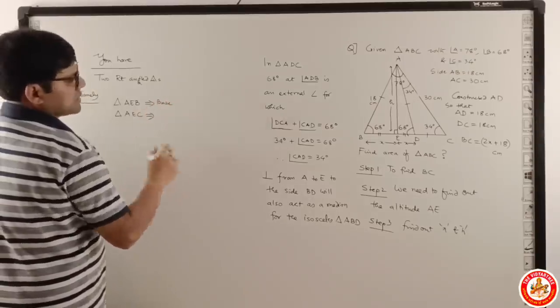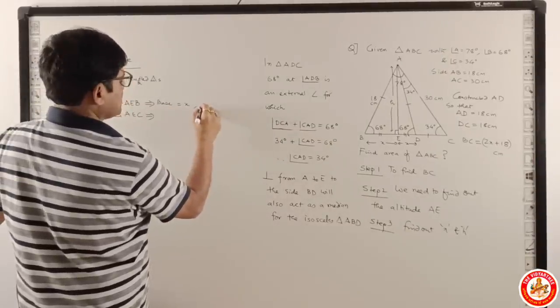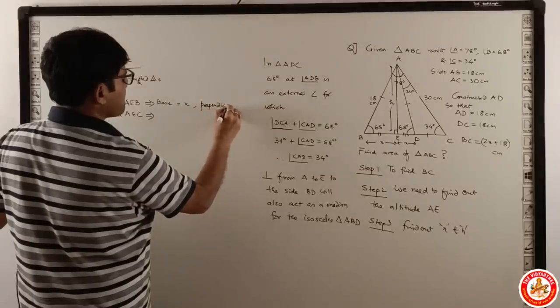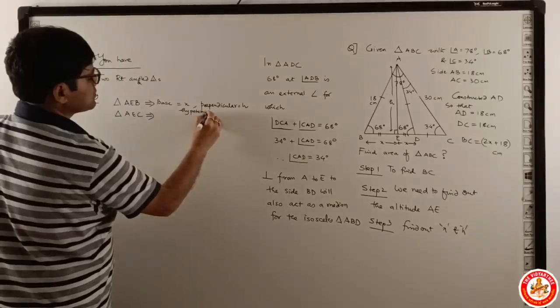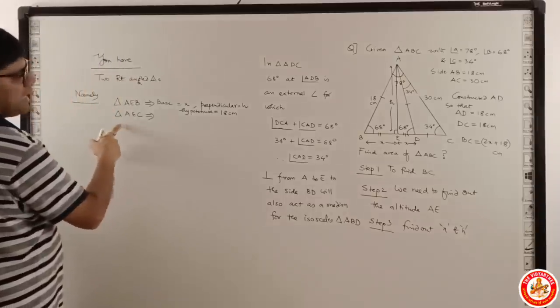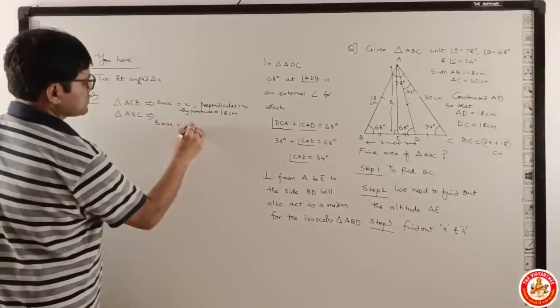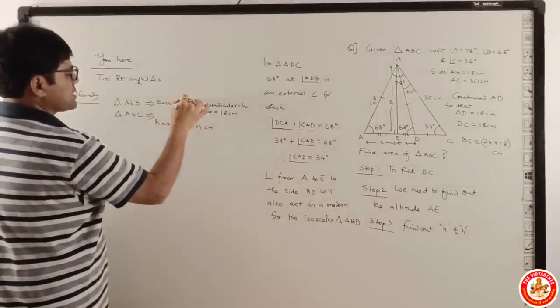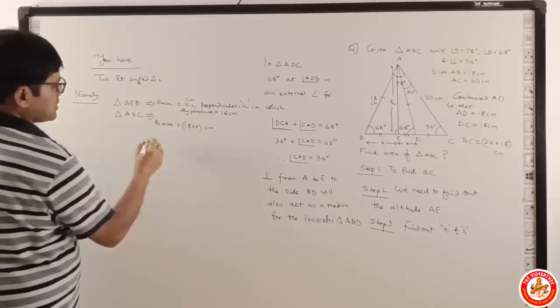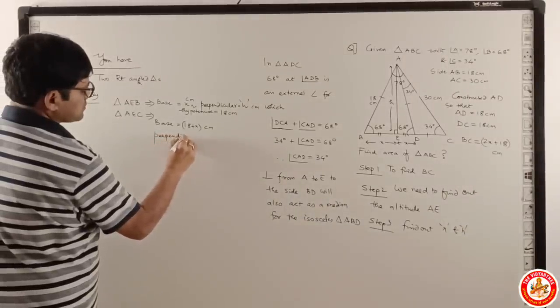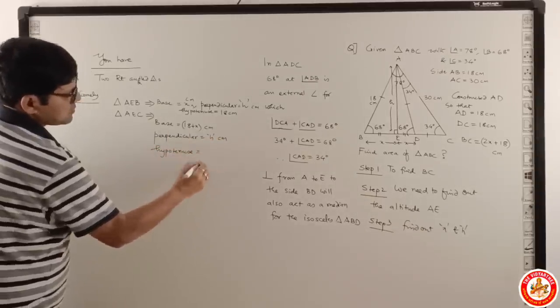In triangle AEB, the base is x, the perpendicular is h, and the hypotenuse is 18 cm. In triangle AEC, the base is 30 plus x in cm, the perpendicular is h in cm, and your hypotenuse here is 30 cm.